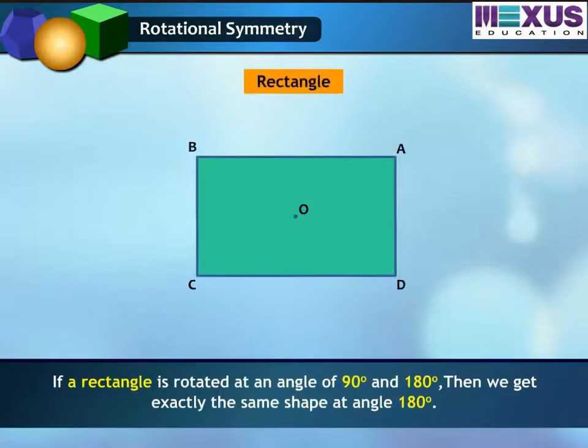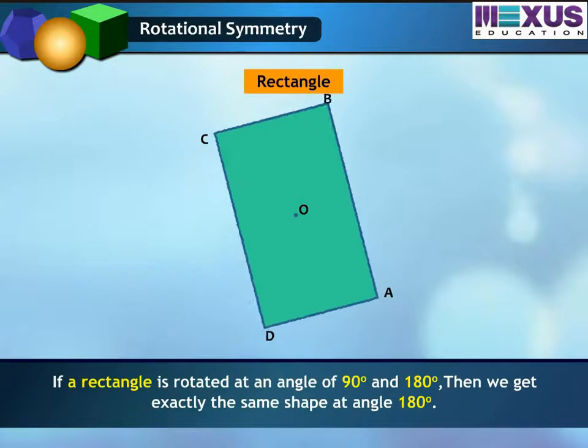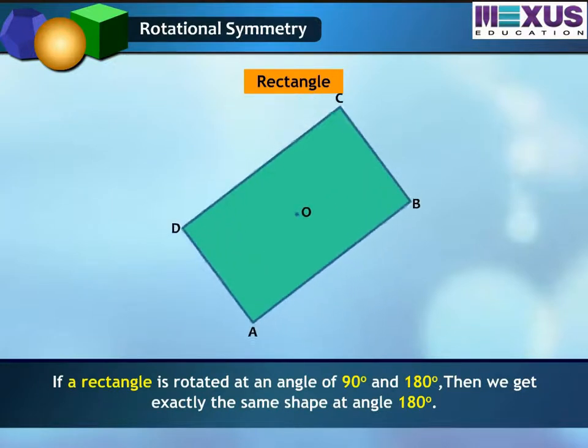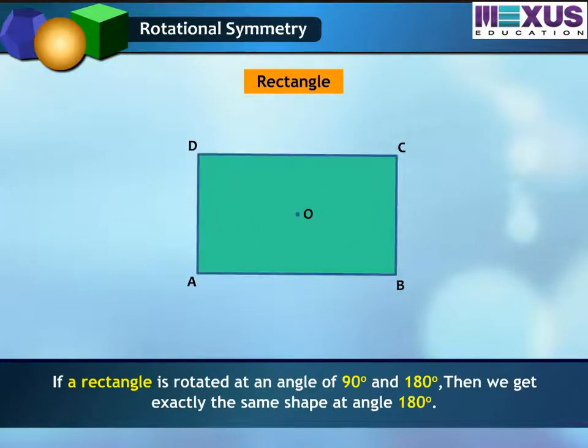Shape 2. If a rectangle is rotated at an angle of 90 degrees and 180 degrees, then we get exactly the same shape at angle 180 degrees.